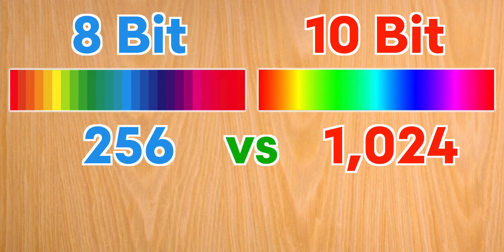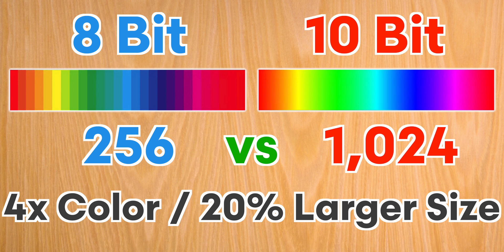Increasing the bit depth will obviously increase file size, but consider that a 10-bit video gives you four times as many colors per channel than an 8-bit video, while only increasing file size by 20%. So obviously having more color options is better for image quality, but if our eyes can only see around 10 million colors, then why do we need to go beyond 8-bit video with its 16.7 million color options?